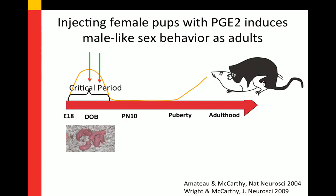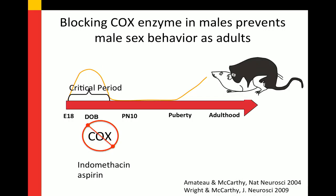Stuart also did the key experiment: he injected newborn pups with PGE2 on the day they were born, raised them to adulthood with no other manipulations, then asked — are you male? He injected females, gave them testosterone as adults, presented them with a sexually receptive female, and these females were absolutely indistinguishable from normally masculinized males. He did the counter-experiment inhibiting cyclooxygenase enzymes with indomethacin or aspirin, which blocked male sex behavior in adulthood — they didn't show female sex behavior but simply became uninterested in females.